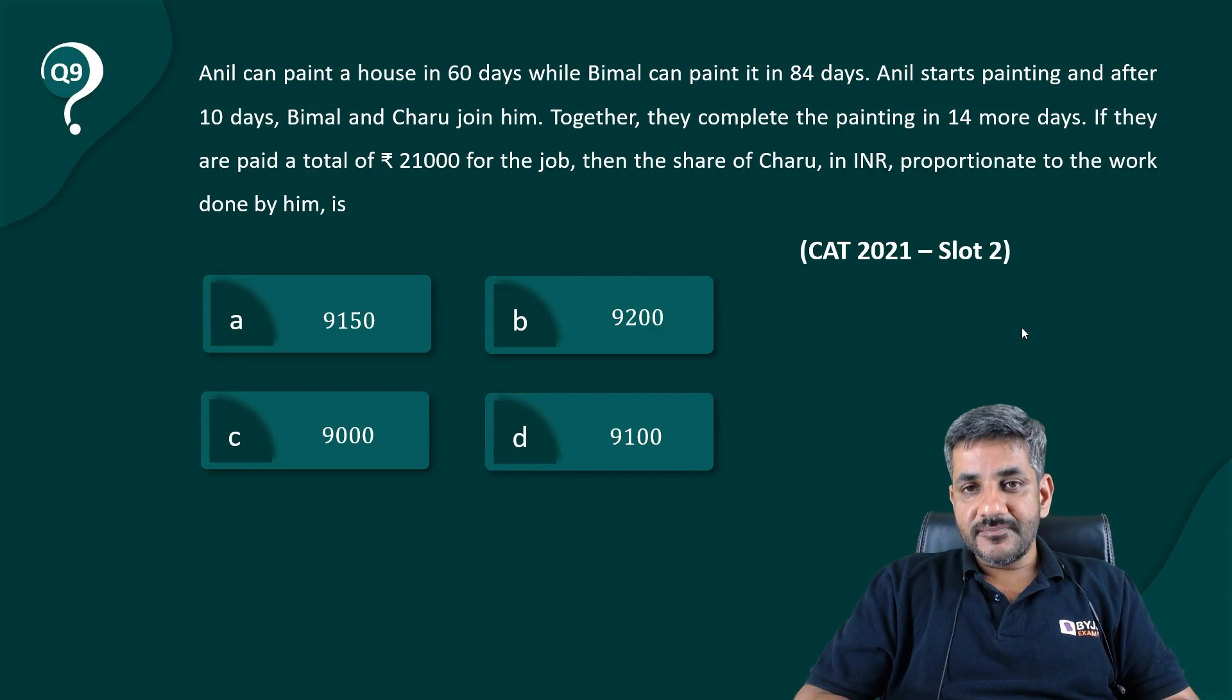Let's have a look at it. Anil can paint a house in 60 days while Bimal can paint it in 84 days. Anil starts painting and after 10 days Bimal and Charu join him. Together they complete the painting in 14 more days.